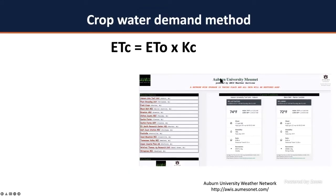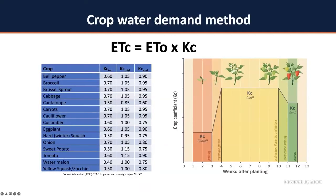ETC can be calculated by multiplying your reference evapotranspiration (ETO) — which reflects soil water loss — by a crop coefficient (KC), which accounts for transpiration. This information can be found at the Auburn University weather station network, the mesonet, where you can find your ETO. The full ETO equation is complex, but it depends on your location on Earth, distance from the sun, time of year, wind, temperature, and several other factors.